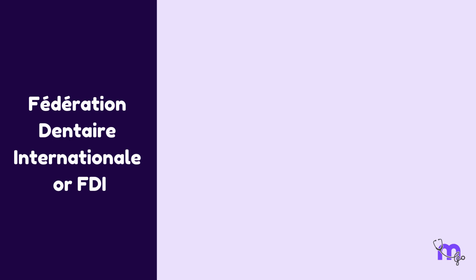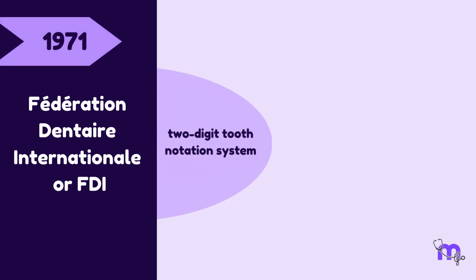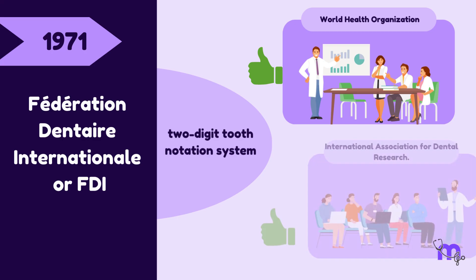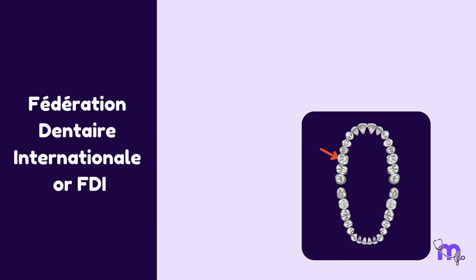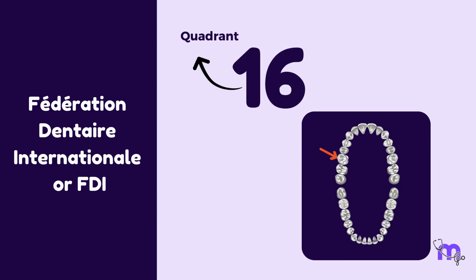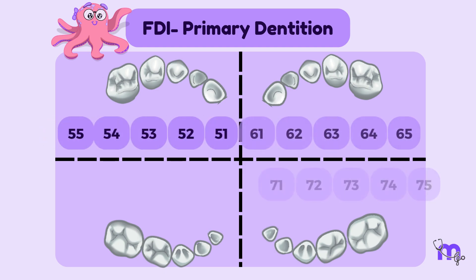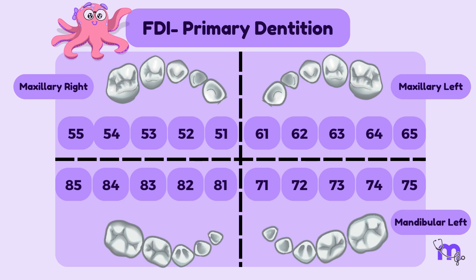Next, let's discuss the third type of tooth numbering system: the FDI system. The Federation Dentaire Internationale introduced a two-digit tooth notation system in 1971 that has gained acceptance from organizations like the World Health Organization and the International Association for Dental Research. In this system, the first digit indicates the quadrant and the second indicates the tooth number.